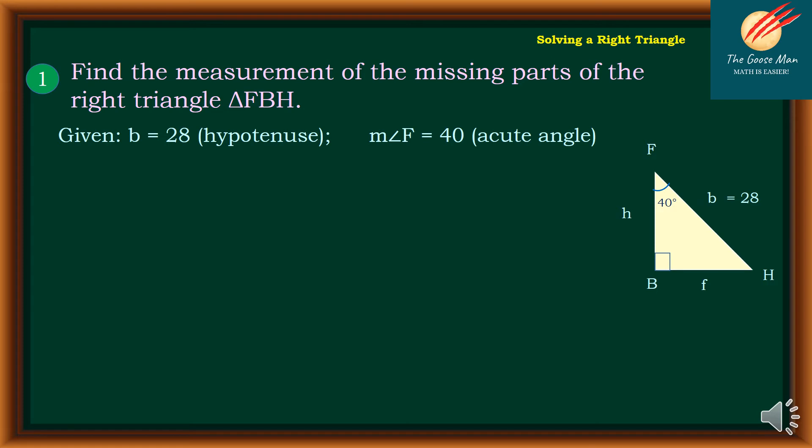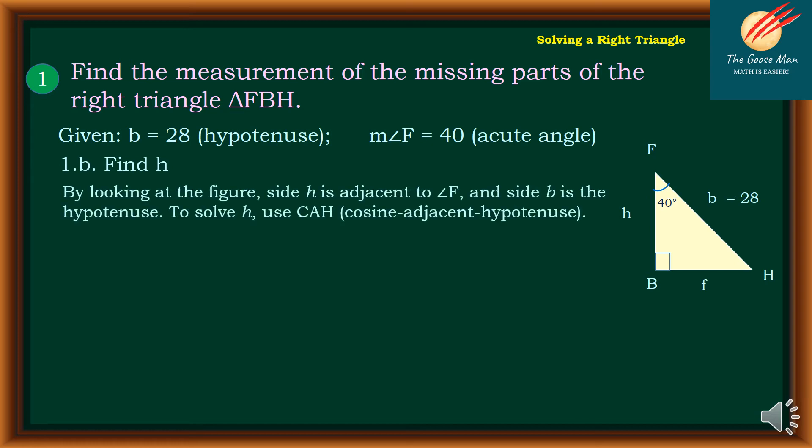To continue with our exercise, this time we would like to find h or side FB. By looking at the figure, side h is adjacent to angle F. That is, side h or side FB is adjacent to angle F, and side b is the hypotenuse.